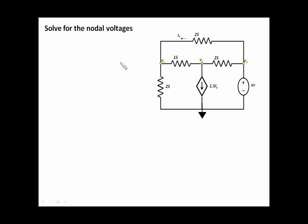Alright folks, so we're going to look at this example, and in this example we are interested in solving for the nodal voltages. If you look at the circuit you can see that you have nodal voltages V1, V2, V3, and you can see that you have a dependent current source here, and you also have an independent voltage source over here.